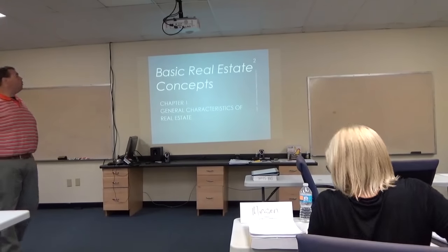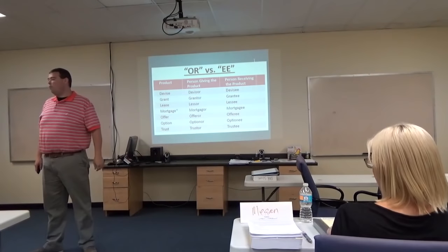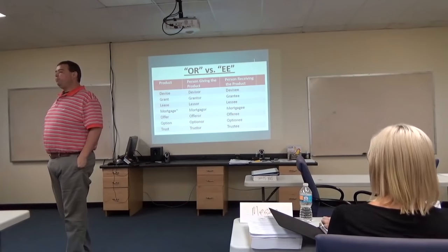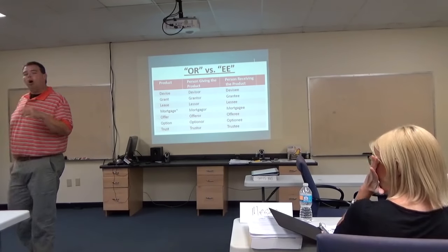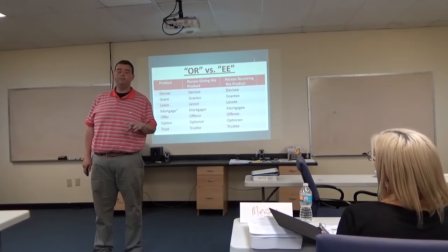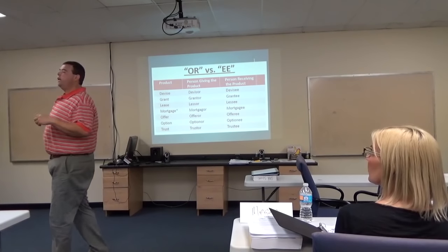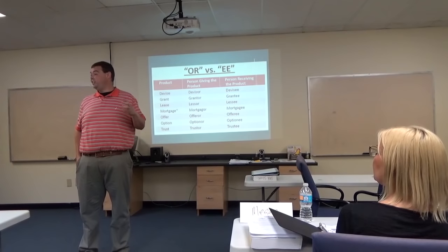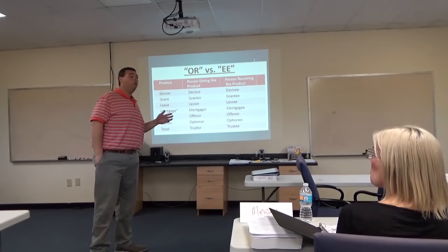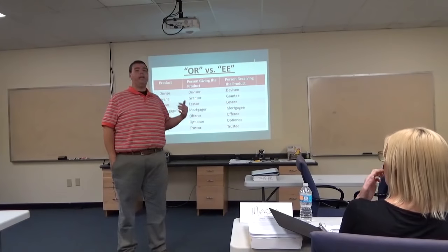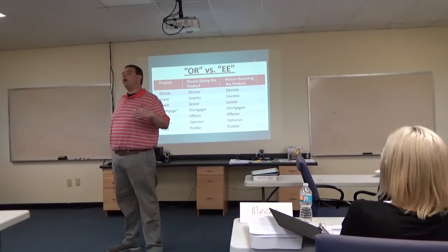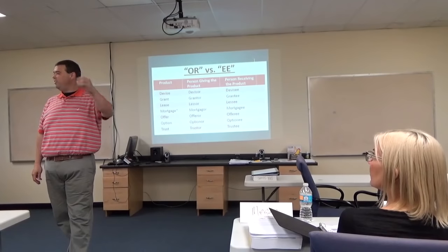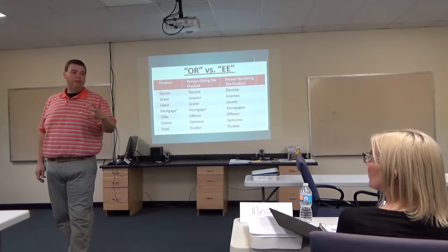Before we get started in chapter one, I want you to look at the first slide in your packet. You're going to see words in this class that have the suffix '-or' or '-ee' at the end. The '-or' and '-ee' tell you which direction things are flowing. The '-or' is always the person giving something — they're the giver. The grantor, for example, is the giver.